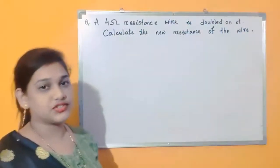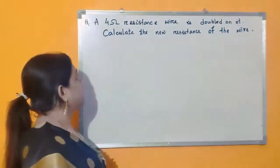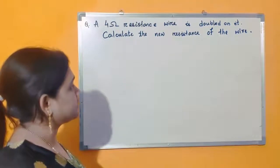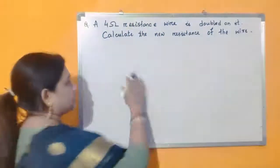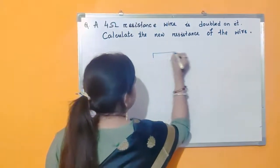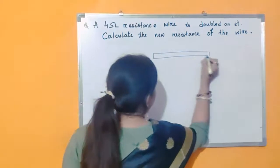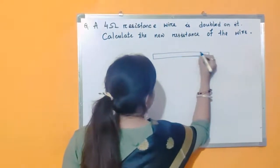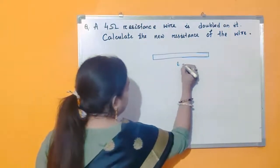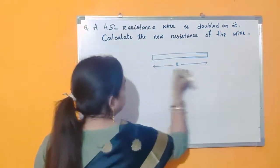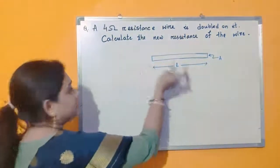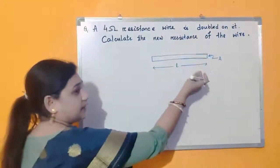The question we have is: a resistance wire is doubled on itself. Calculate the new resistance of the wire. So basically a wire is given. Suppose this is a wire of length L and area of cross-section is A. According to the question, the wire is doubled on itself — what does it mean?